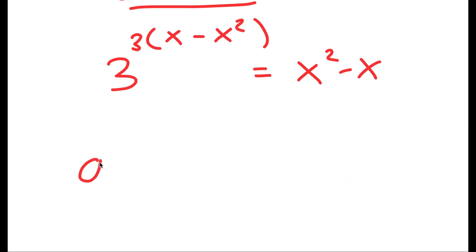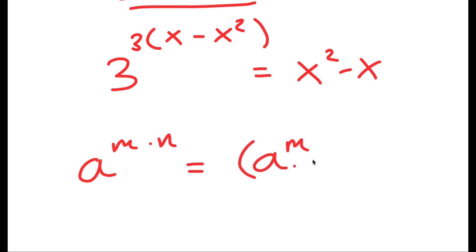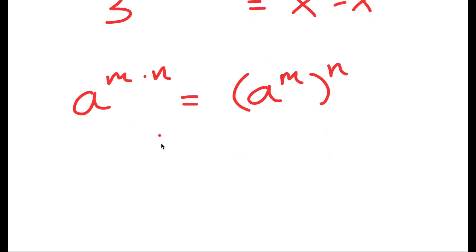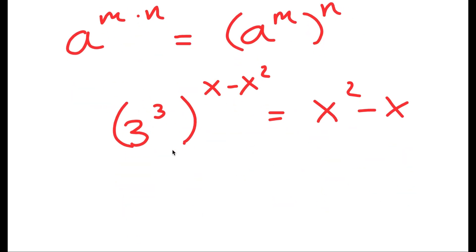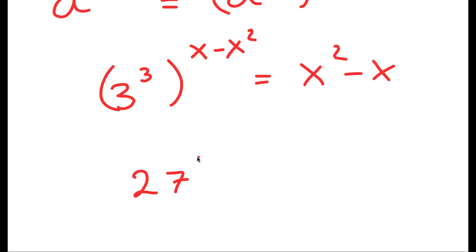If I have something in the form a to the power of m times n, this is equal to a to the power of m to the power of n. So in this case, I have 3 to the power of 3 times (x minus x squared), and I can rewrite this as 3 to the power of 3, to the power of (x minus x squared). Now, 3 to the power of 3 is 27, so I get 27 to the power of (x minus x squared) is equal to x squared minus x.